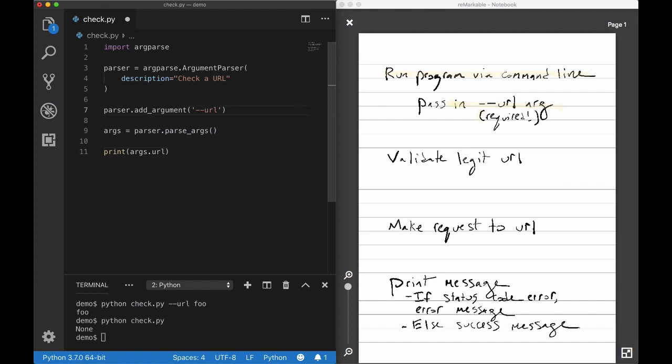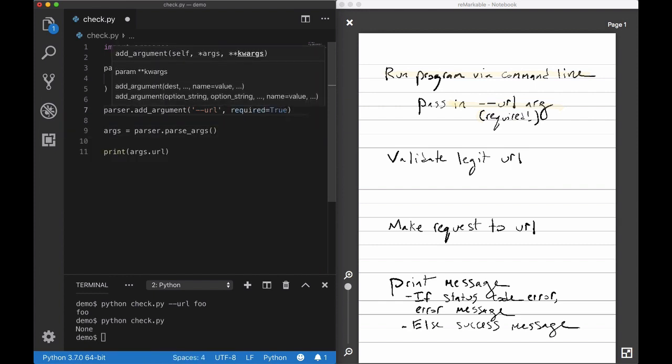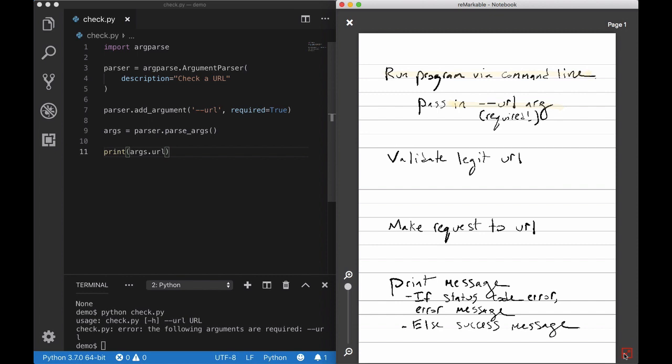And then back in the code, I'm going to make it required in the way that the arg parser wants me to do it. So now if we try to run the program without a URL, it says the following arguments are required URL. OK, great.